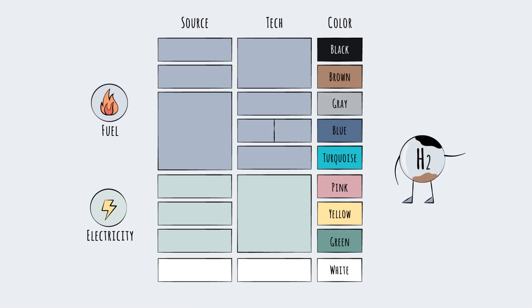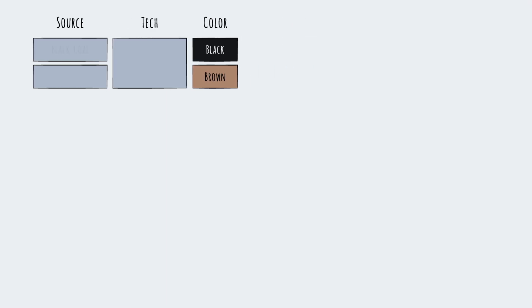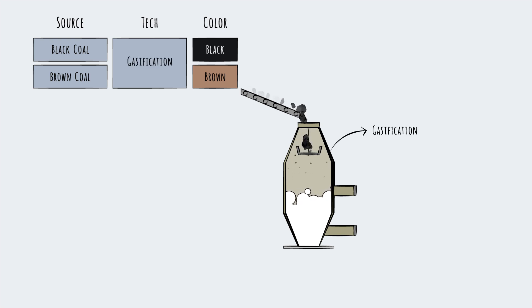The dirtiest fuels are black and brown coal. Black coal is the more energy dense but higher emitting variety. Black and brown coal can be used to make black and brown hydrogen respectively via a process called gasification, where pulverized coal is mixed with hot steam or air. This is an extremely low cost method and is still in use, particularly in China.